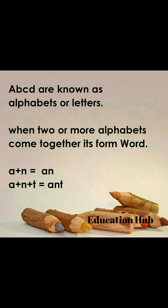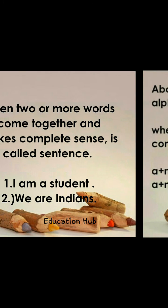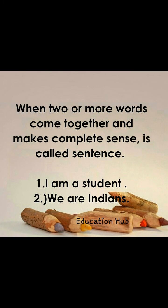When two or more alphabets come together, they form a word. For example, a plus n plus t is equal to 'ant'. This is the way we form a word — by joining the letters together, letters come together to make a word.